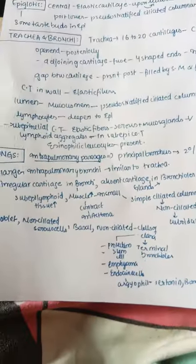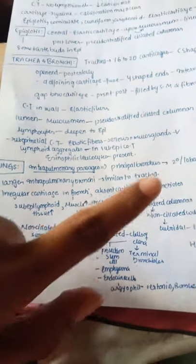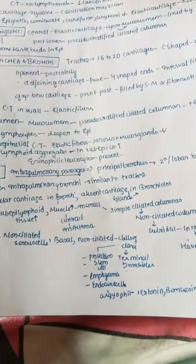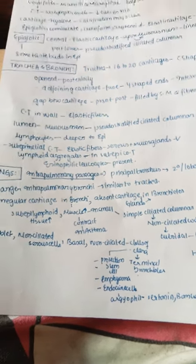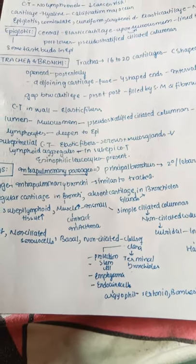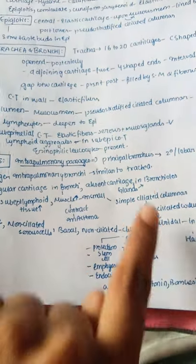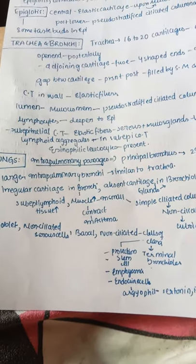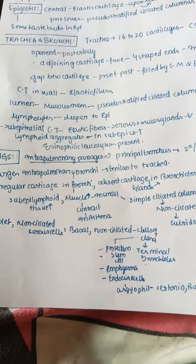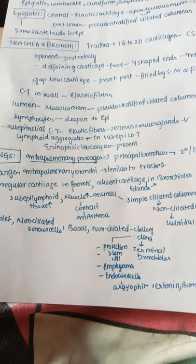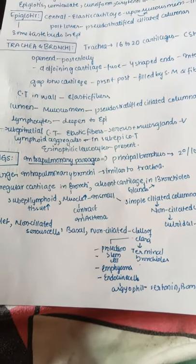The larger intrapulmonary bronchi are similar to the trachea with mucosa, submucosa, cartilage, smooth muscle layer, and outer adventitia. Irregular cartilage is present in the bronchi, but cartilage and glands are absent in the bronchioles. Sub-epithelial lymphoid tissue and smooth muscle increase as the bronchi become smaller, and the smooth muscle contracts in asthma causing bronchoconstriction.